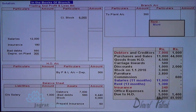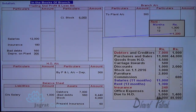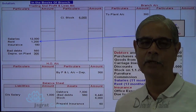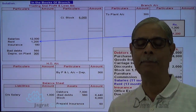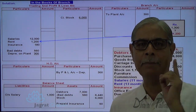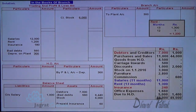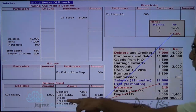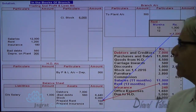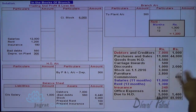Rent was paid for 13 months = 1,300, so 1 month is prepaid. Rent for 12 months = 1,200 is debited to the profit and loss account. Prepaid rent = 1,300 − 1,200 = 100, which appears on the asset side of the balance sheet.